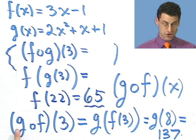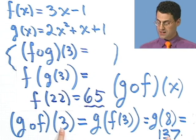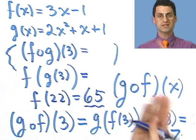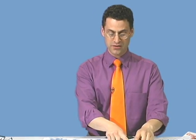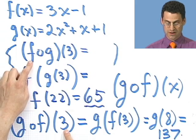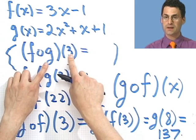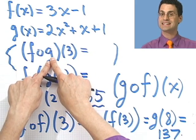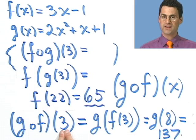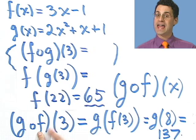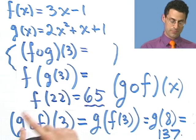So notice that f composed with g of 3 is 65. However, g composed with f of 3 is 137. They're not always the same because I'm plugging in first into one and then into the other. And so it's important to understand what the differences between these two things are. This says, first take the number 3 and plug it into g and take that answer and plug it into f. Whereas this says, take the number 3 and first plug it into f and then take that other answer and plug it into g.